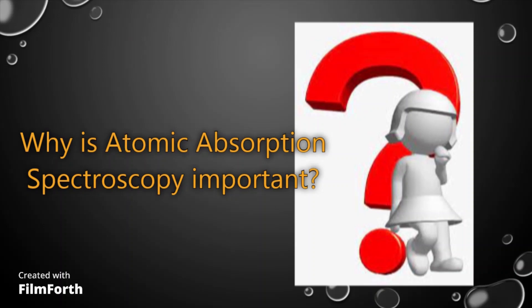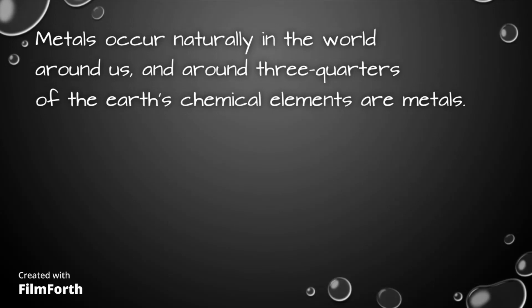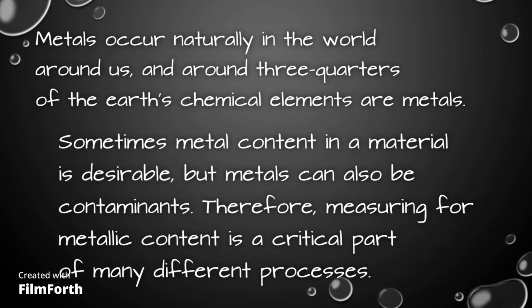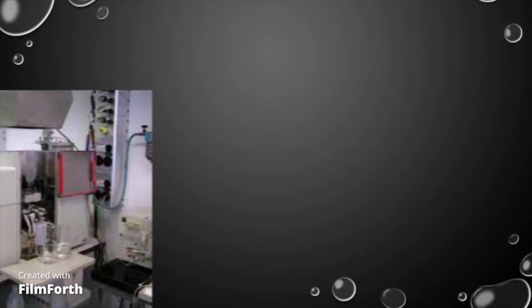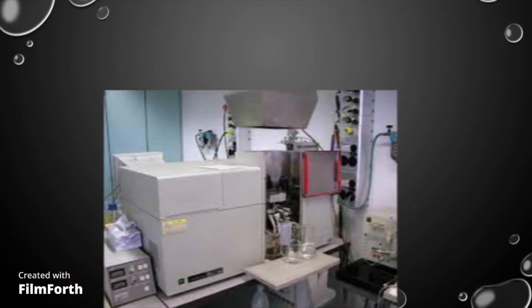And lastly, why is atomic absorption spectroscopy important? Metals occur naturally in the world around us, and around three quarters of the Earth's chemical elements are metals. Sometimes metal content in a material is desirable, but metals can also be contaminants. Therefore, measuring for metallic content is a critical part of many different processes. Although atomic absorption spectroscopy has been an established method for analysis of materials for metallic elements for many years, it remains a benchmark technique.